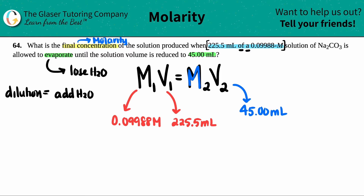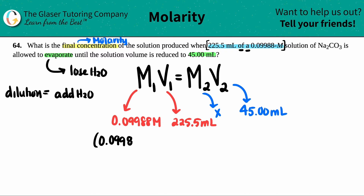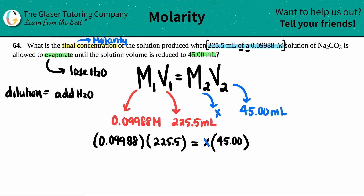And what's M2 — what's the other molarity? Well, that's what they're asking for: what is the final concentration, what's the final molarity? So that's X. Now, since we have all of our values and one variable, which is X, I'm going to plug in 0.09988 times 225.5. I'm getting rid of the units because when I do the actual math I don't like to put in units — I just go back and put the final solution units in. So this is X times 45. We're going to solve for X, so we divide by 45. You got to do it on both sides — you got to be fair.